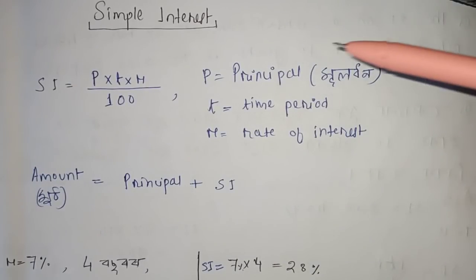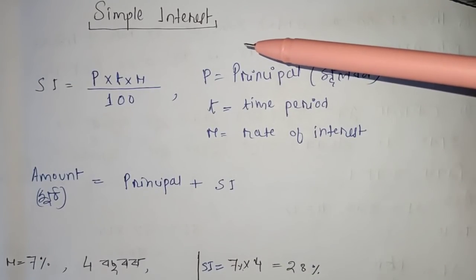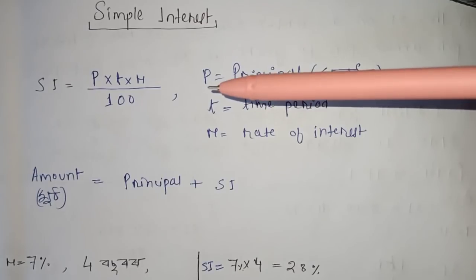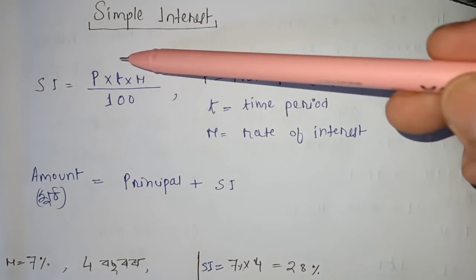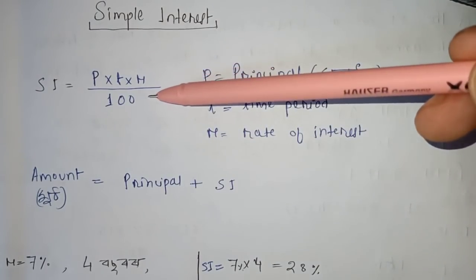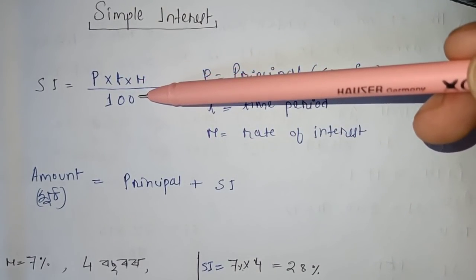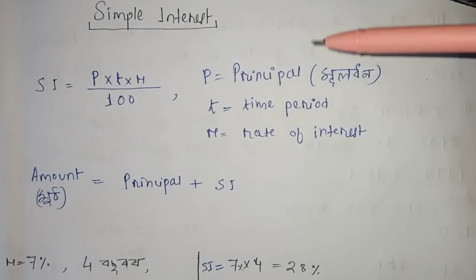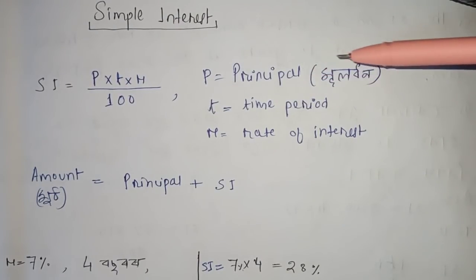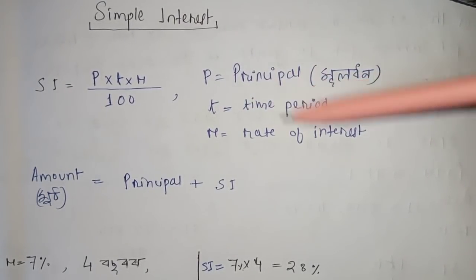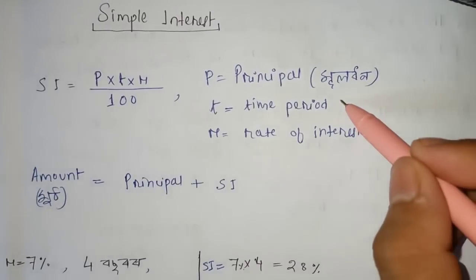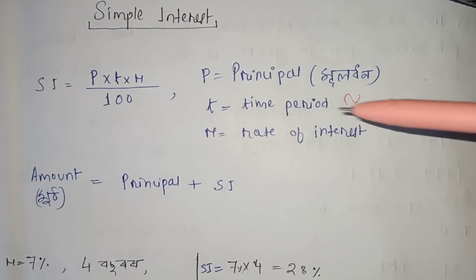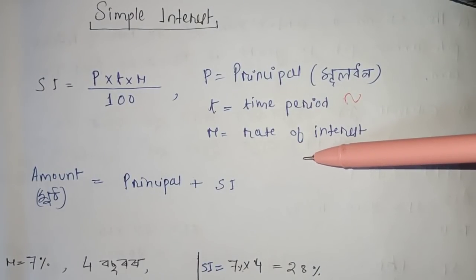Simple interest is a problem to solve with the formula. The formula is PTR divided by 100. P is the principal, T is the time period, and R is the rate of interest.